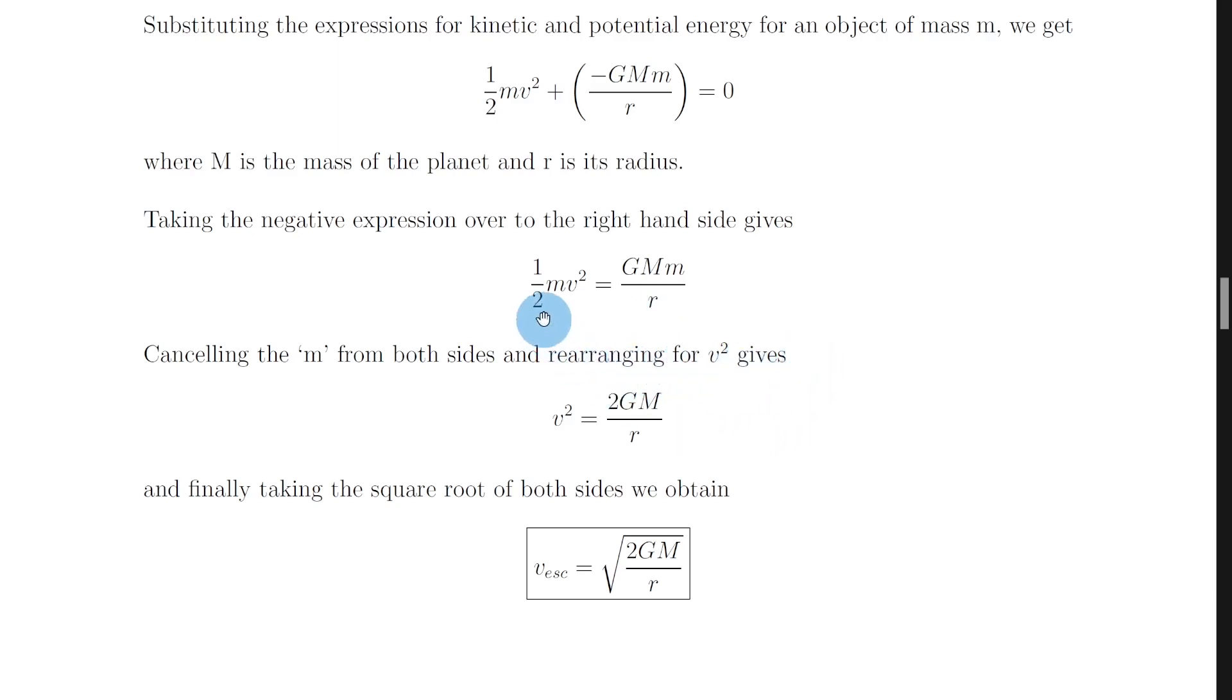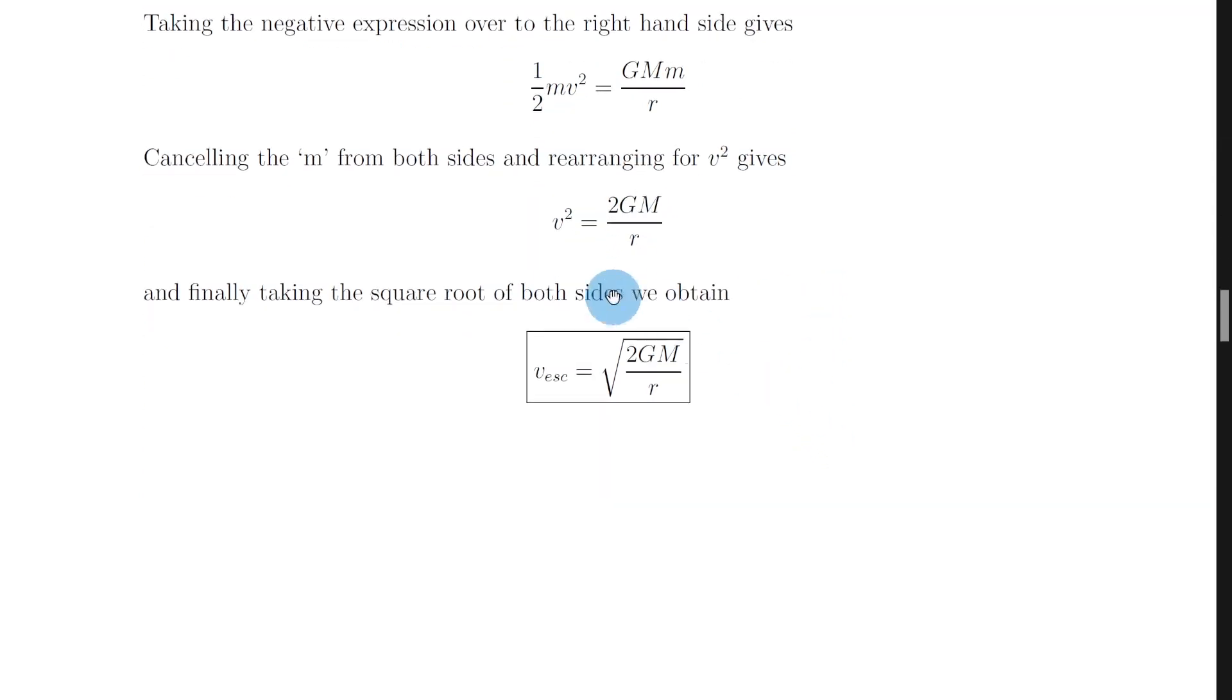And then rearranging for v squared, we can just multiply both sides by two to get rid of this half fraction here. And that gives us v squared equals 2GM over r. But remember, we want an expression for escape velocity, v not v squared. So what we finally need to do is take the square root of both sides to obtain v escape is equal to root 2GM over r.